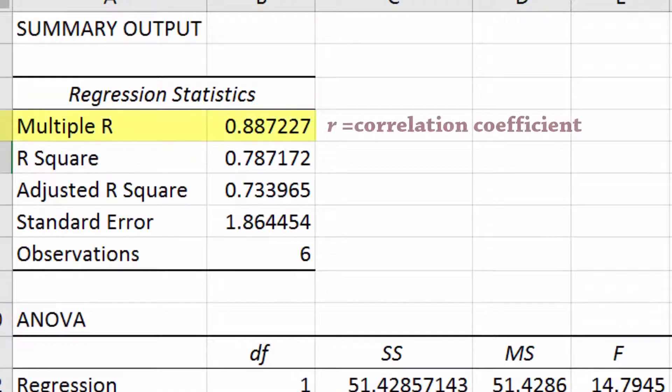At the top here, we have multiple R. This can be taken for correlation coefficient r in simple linear regression. The problem with it in this output is that it is always positive.